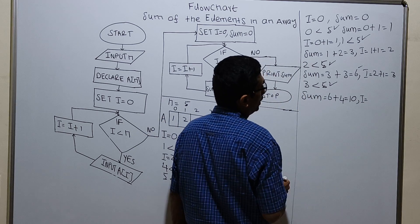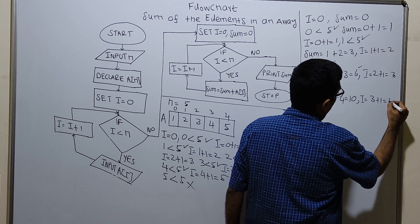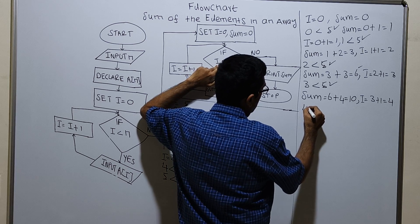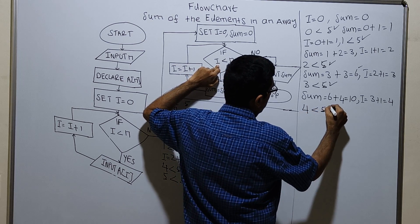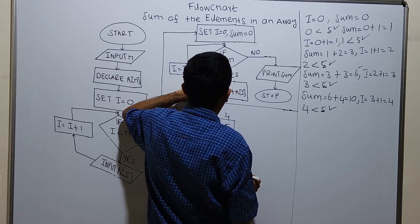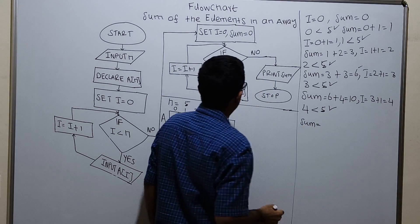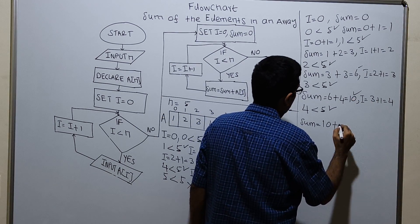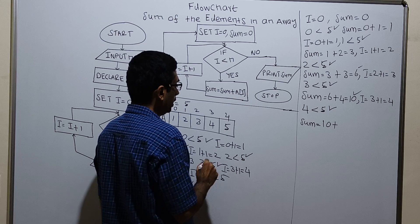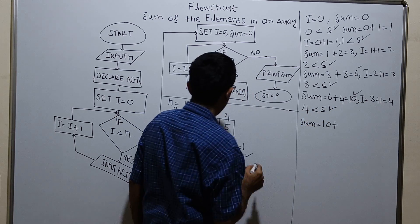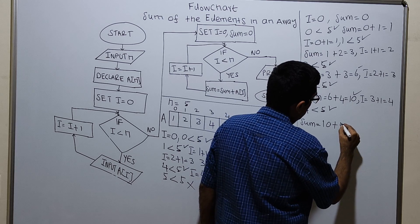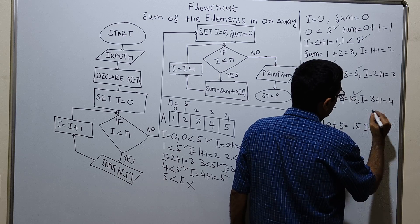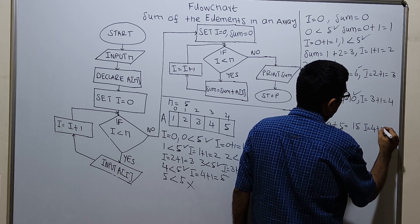i equal to existing value of i is 3. 3 plus 1 which is equal to 4. Checking condition i less than n: 4 less than 5, condition is true. sum equal to existing value of sum which is 10. Plus a of i, i value is 4, so a of 4 having value 5. Equal to 15.